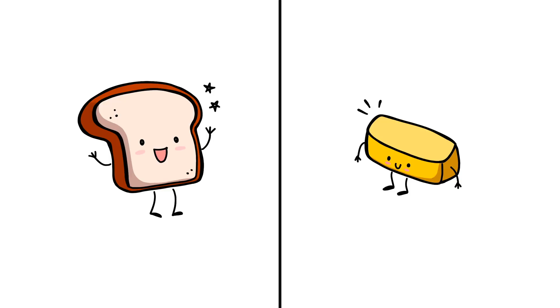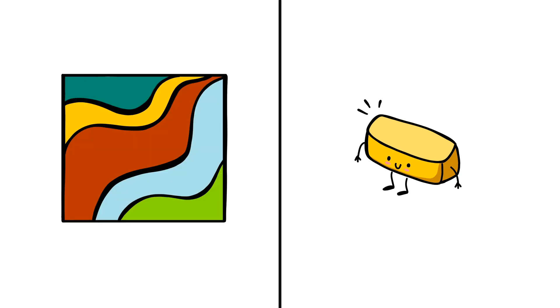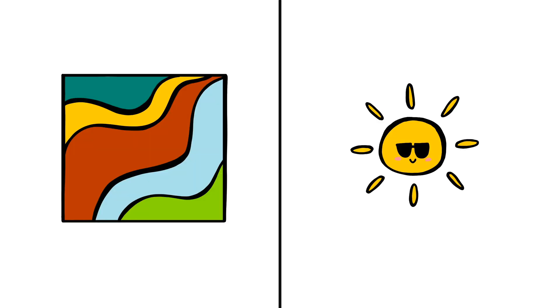Adjustment layers are the bread and butter of Affinity Photo. They allow you to edit the color and lighting of your images. But with so many to choose from, it can be hard to know which ones to use.